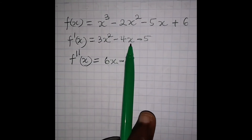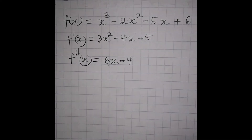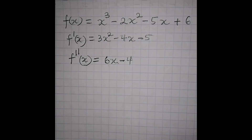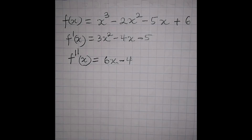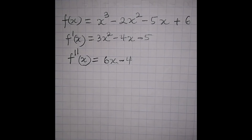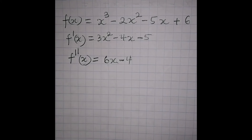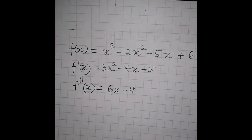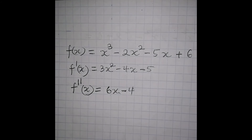Now, why are we looking at the first and second derivatives? They are very important because when you are dealing with a cubic graph, you need to consider the turning point and also the point of inflection. We will talk more about that in the next lesson. Whenever you are looking for the x-coordinate of the turning point, you need to apply these derivatives. In our next lesson, we will determine the x-coordinates of the two turning points and the point of inflection.